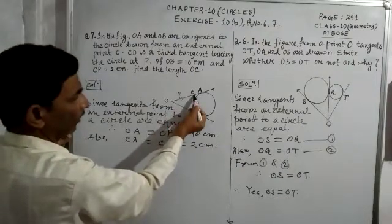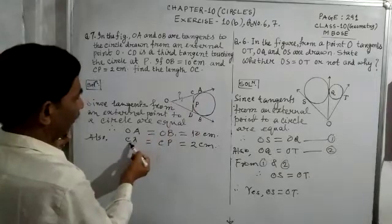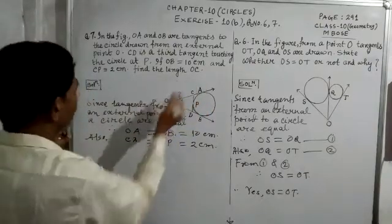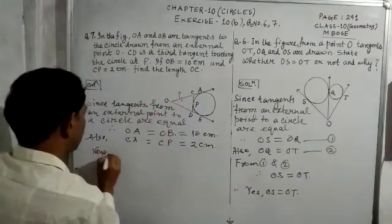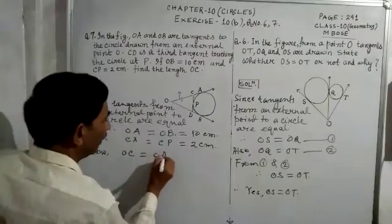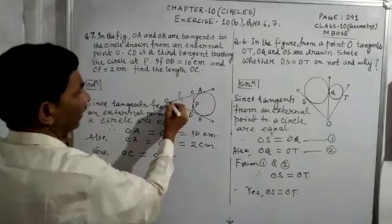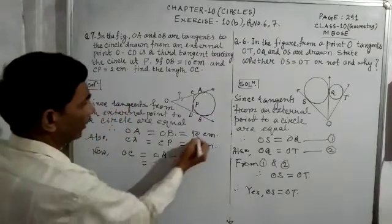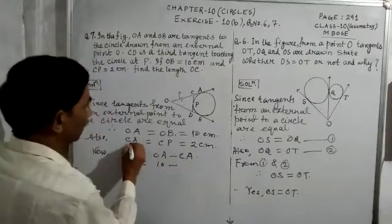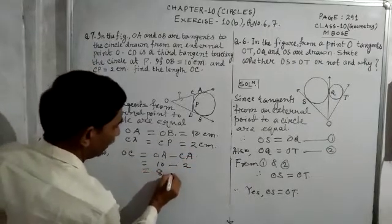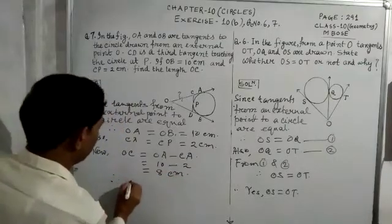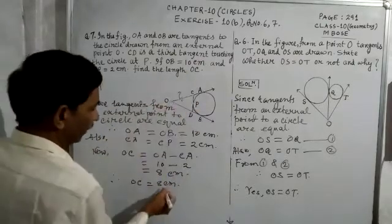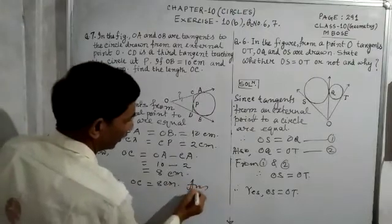We have to find OC. We know OA equals 10 cm and CA equals 2 cm. From OA minus CA, we will get OC. So OC equals OA minus CA, which is 10 minus 2, equal to 8 cm. Therefore, OC is equal to 8 cm. That is the answer.